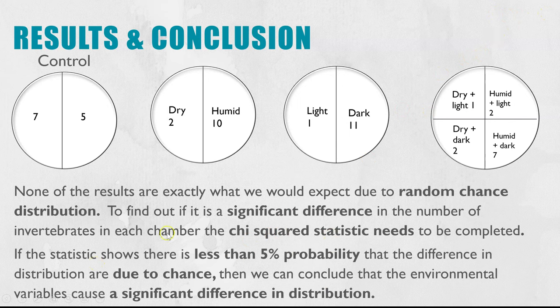The point of doing the statistic is to help with your conclusion and this is so you can say if it's significant or not. If the statistic shows there's less than five percent probability that the difference in the distribution between the two chambers or the four chambers are due to chance, then we can put in our conclusion that the different environmental variables in each of these chambers does cause a significant difference in distribution.